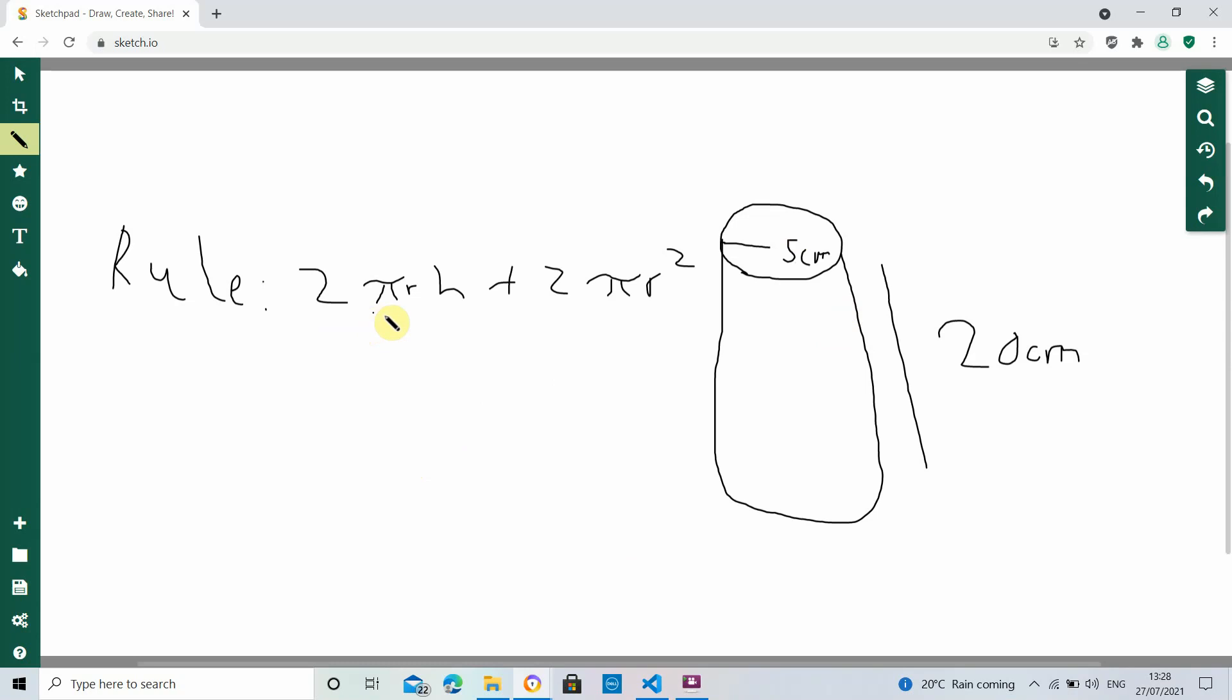And the rule is 2 pi r h plus 2 pi r squared, where r is the radius and h is the height.